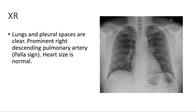On x-ray, the lungs and pleural spaces, as well as the heart, are normal. However, we can appreciate a prominent right descending pulmonary artery, or Palla's sign.